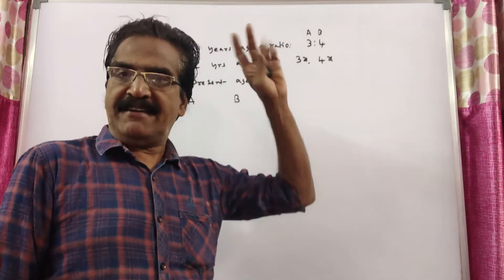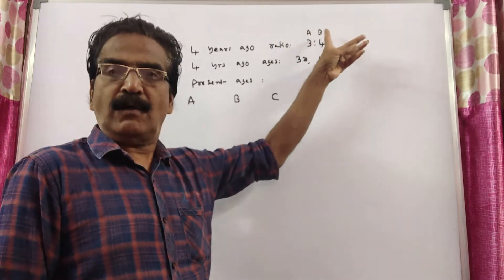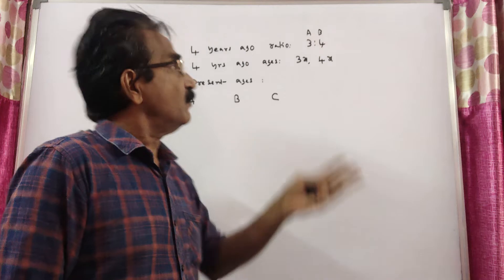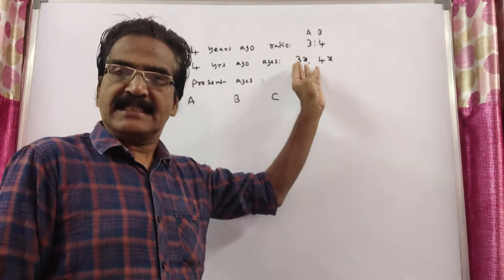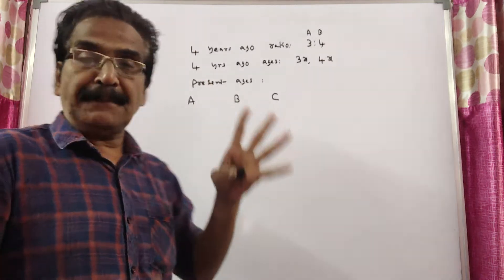See friends, the average age of A and B 4 years ago was 3 to 4. That means 4 years ago their ages were 3x and 4x. And present ages...